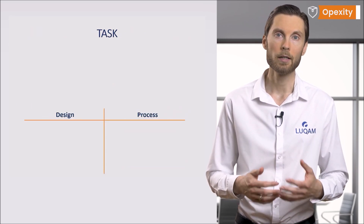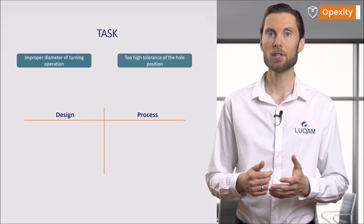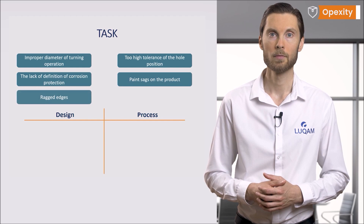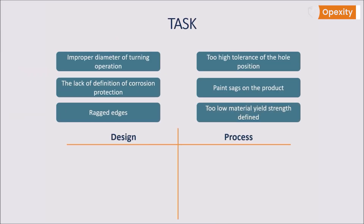Now it's time for a short task. You can see six cases of irregularities on the screen. On the basis of your knowledge, try to put them into one of two categories — design or process failure: improper diameter after turning operation, too high tolerance of hole position, lack of definition of a product's corrosion protection, paint sags on the finished product, ragged edges, and too low material yield strength defined. Stop the video for one minute, then press play to check your answers.